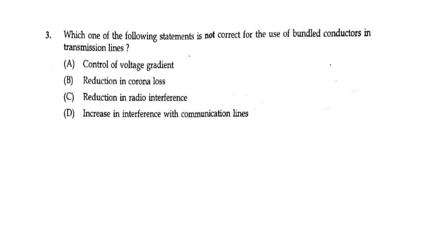Which one of the following statements is not correct for the use of bundle conductors in transmission lines? Bundle conductors are mainly used to control the voltage gradient, reduction in corona loss, reduction in radio interference, and reduction in interference with communication lines. The last option — reduction in interference with communication lines — is the wrong statement, so that is the correct answer for this problem.